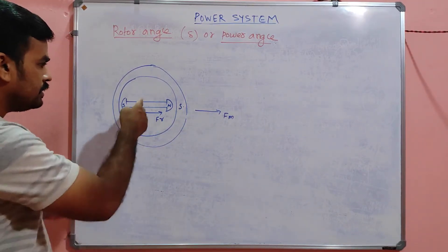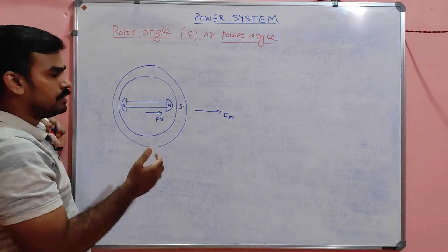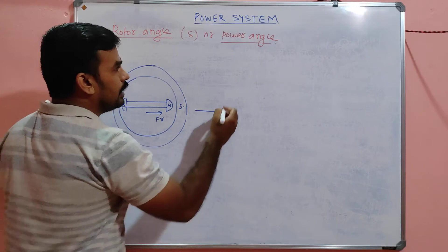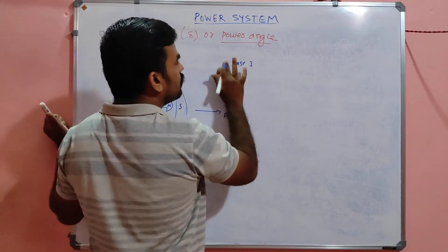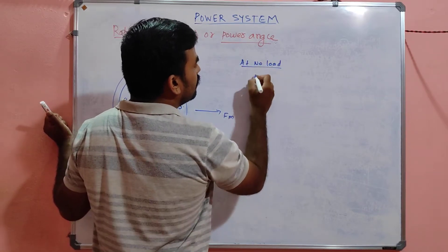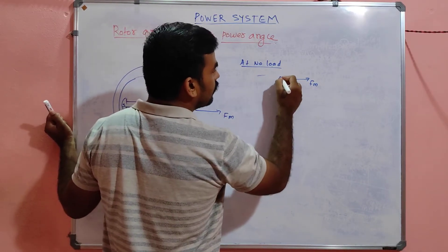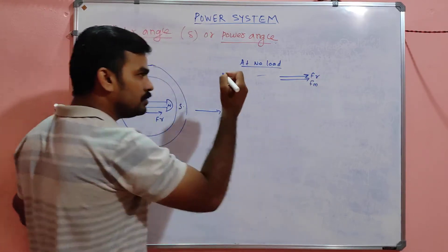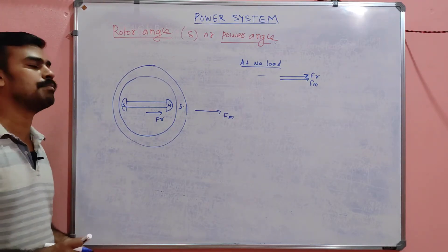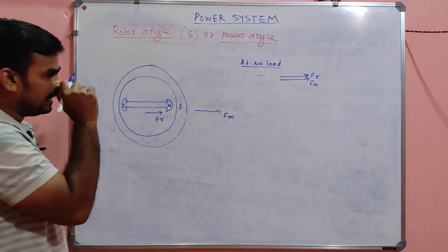This is the no-load condition. At no load, the stator MMF (fm) and the rotor MMF (fr) are in phase — there is no phase angle difference between them due to the magnetic locking. Then, what happens when the machine is suddenly loaded?